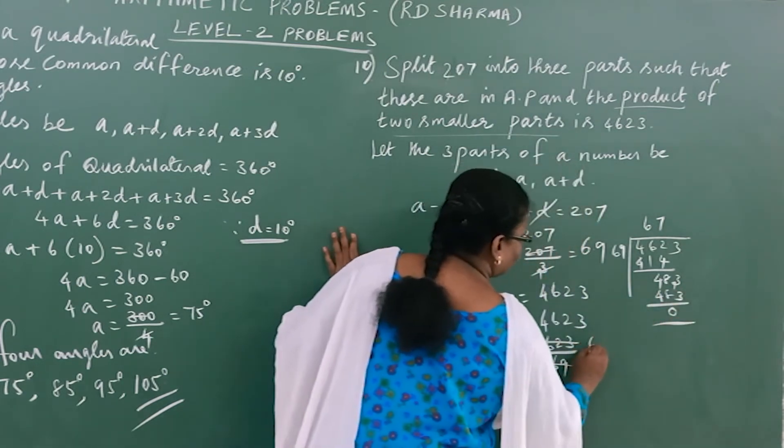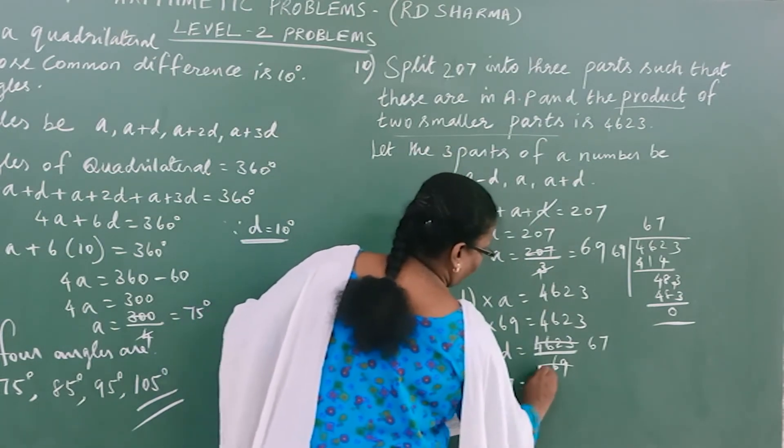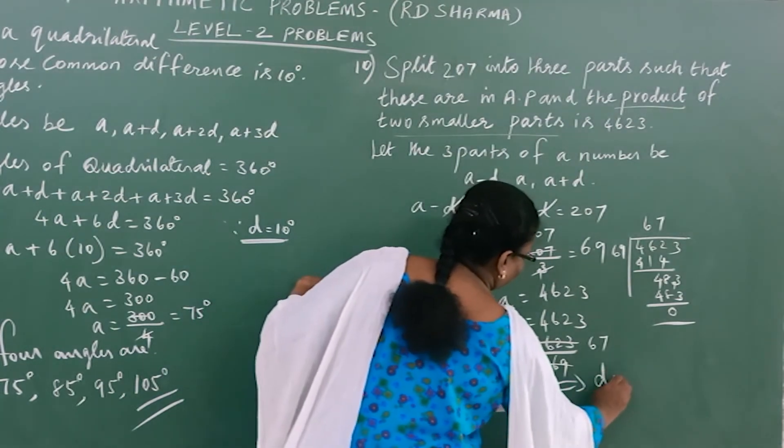The quotient is 67. So 69-67 = D. This implies that D = 2.